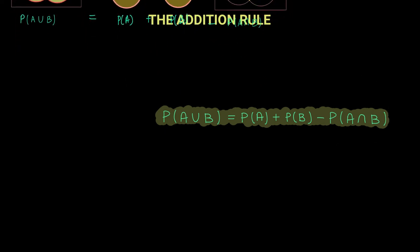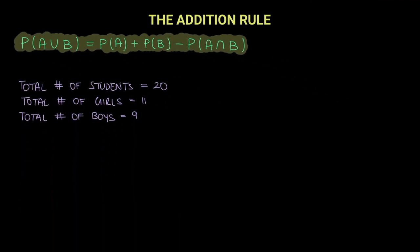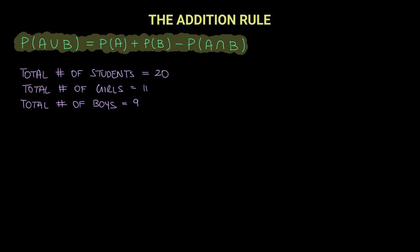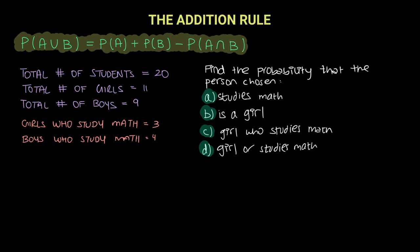Now that we've understood what the addition rule is, let's solve an example question. There are a total of 20 students, of which there are 11 girls and 9 boys. Out of those, there are 3 girls who study math and 4 boys who study math.